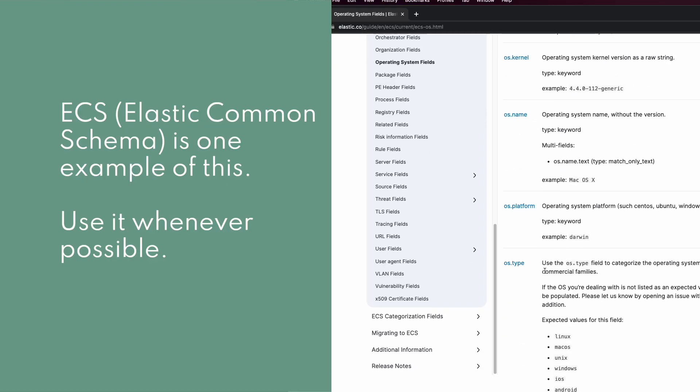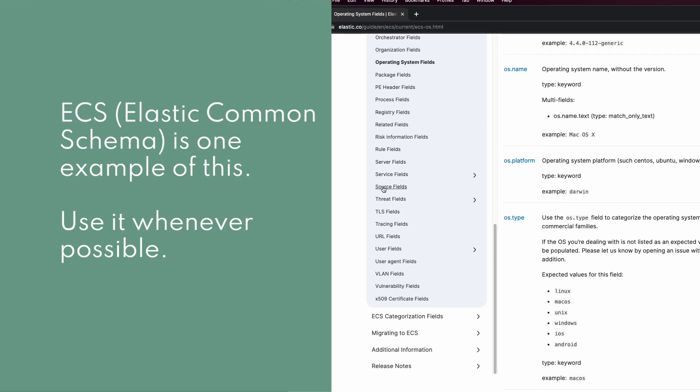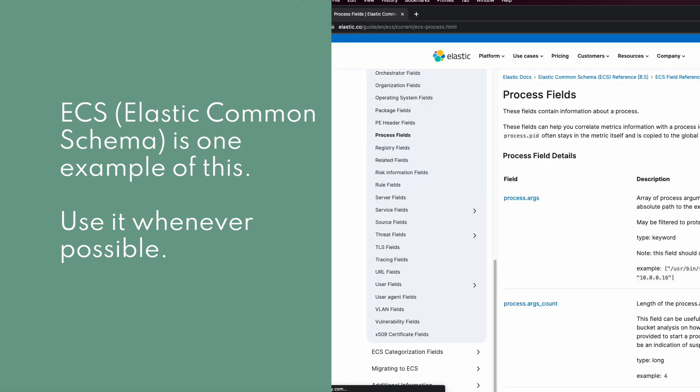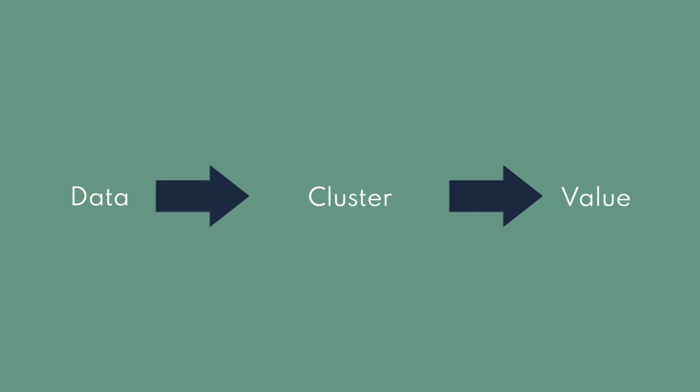This doesn't happen with every Elasticsearch use case. If you're using it for observability or security data, the mappings will usually be specified by the agent gathering the data. When you're extracting data from one source and moving it into Elasticsearch, you need to create the index mapping yourself. I built an index mapping that doesn't allow for a query I want to run, and I thought it would be good to show the problem and give a couple of different solutions.